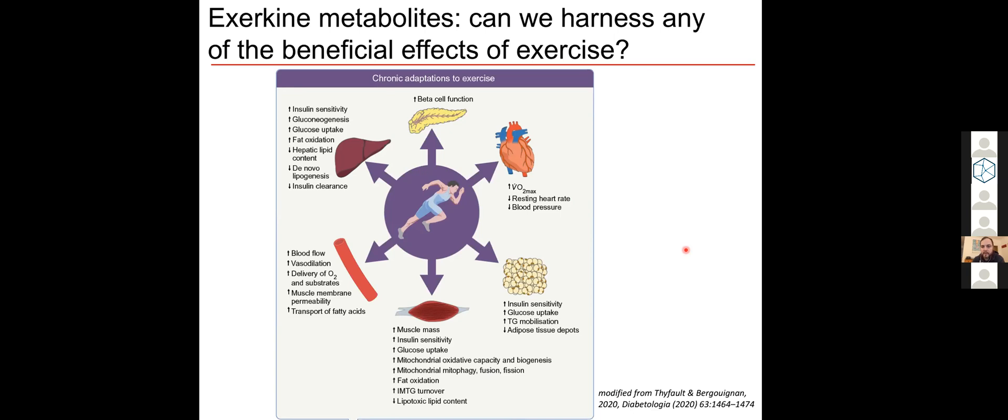One question that we were interested in is the relative tissue production and distribution of these exerkine metabolites under physiological conditions in vivo. There's a big interest in exerkines at the moment in the exercise physiology field because these are signaling peptides and metabolites that are produced by tissues in response to exercise and they can induce effects locally or in other tissues throughout the body.